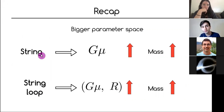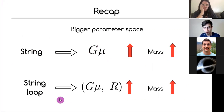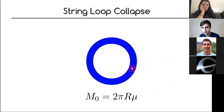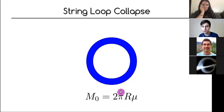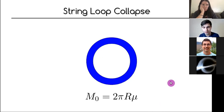The parameter space: for the infinite string we varied the string tension Gμ to get more massive strings; for loops we also have the loop radius R. Increasing the radius makes the loop more massive — the mass is 2πR times the energy per unit length μ. Once we have the initial data we evolve it with BSSM, and the loop collapses due to string tension, like a rubber band that you stretch and release.